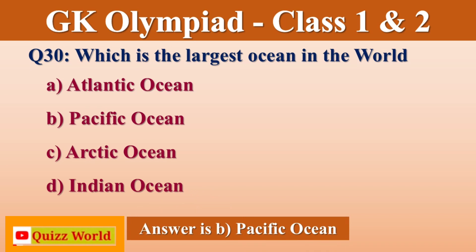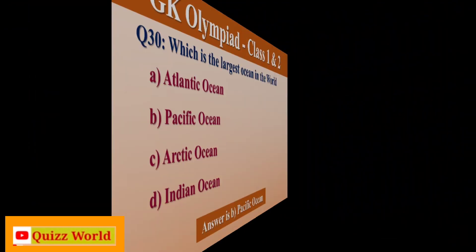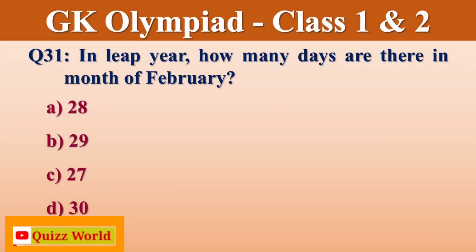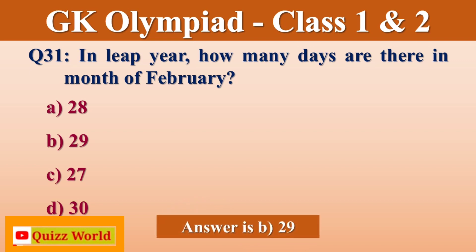How many days are there in February? 28 days, 29 days, 27 days, 30 days. Right answer is 29 days.